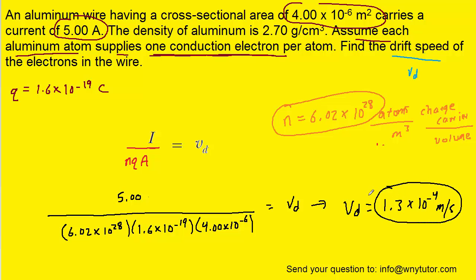If for any reason you needed to convert that into millimeters per second, you would simply multiply by 10 to the positive 3. So if you did that, the drift speed would become 0.13 millimeters per second. Either answer is acceptable.